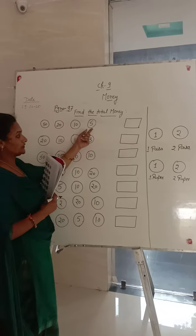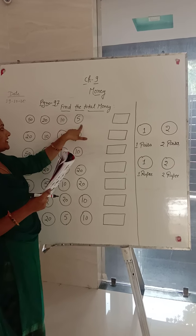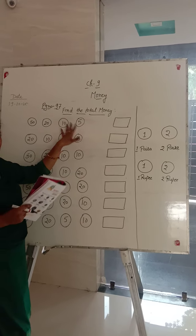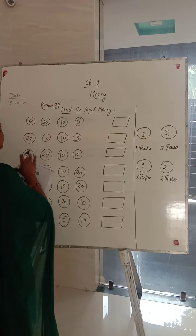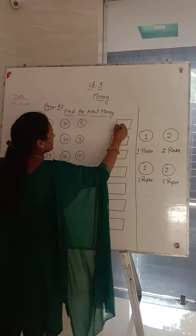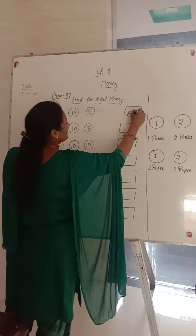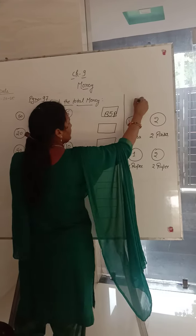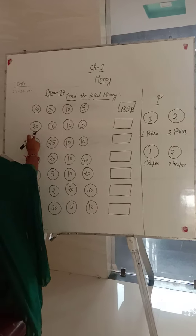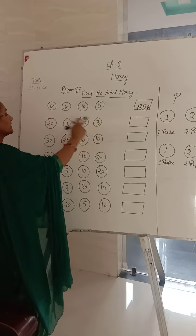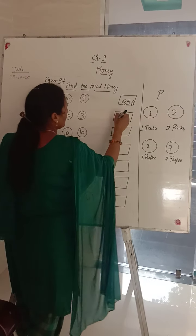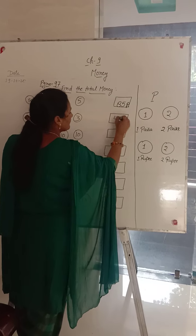Find the total money. Next is 20, 10, 10, 3 — means 20, 30, 40, plus 3. Total gaya hain: 43 paisa.